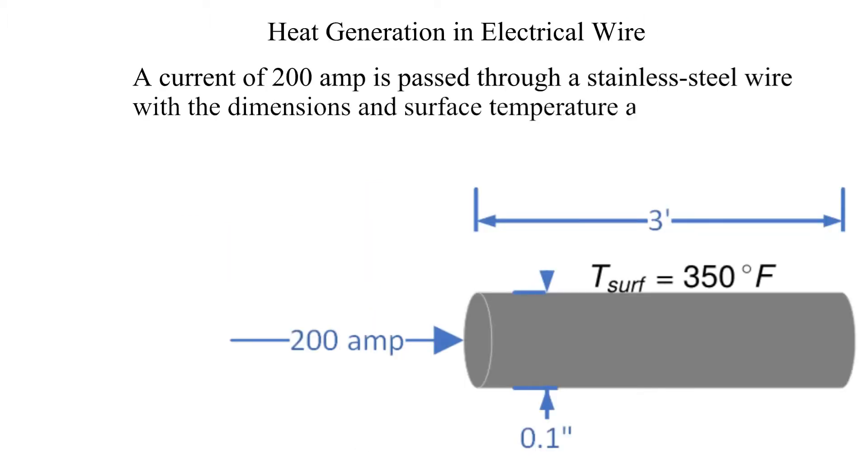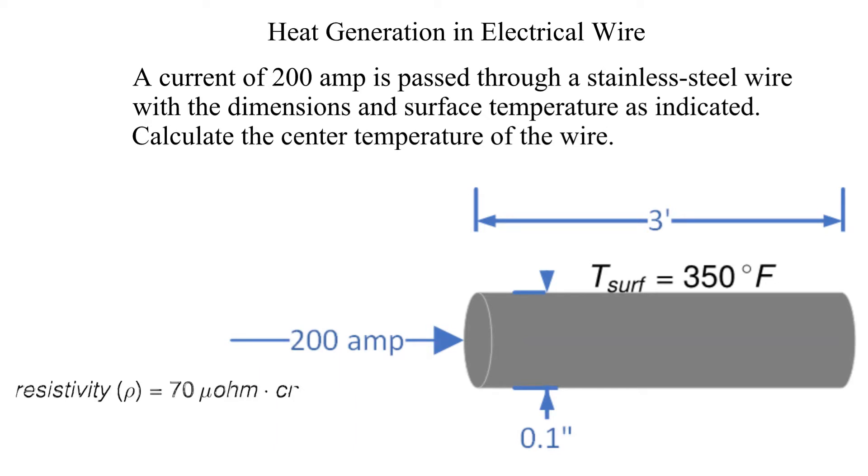200 amps of current is passed through a stainless steel wire. The dimensions and resistivity of the wire are provided. We want to calculate the center temperature of the wire.